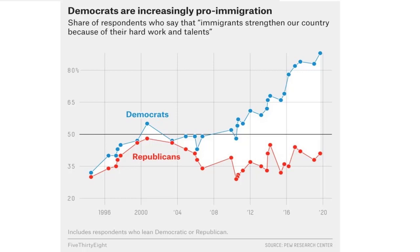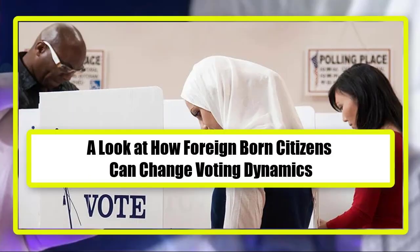So if you're a Democrat, you obviously want more immigration because it's going to help you politically. Since the year 2000, Democrats by far are pro-immigration, and there's obviously a reason for that because it's been helping them politically. The AI gives you some things to think about whether or not immigration can influence voting dynamics, and the data seems to suggest it does. Some people suggest it may not in the long term, but at least in the short term it has. Take our online poll: Can Foreign-Born Citizens Change the Political Dynamics in Elections?